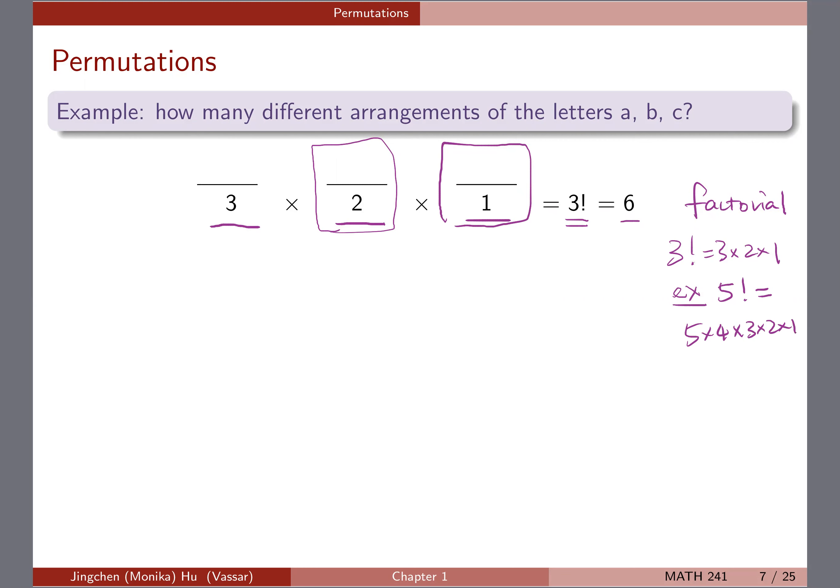So for example, if we're going to have five different letters, A, B, C, D, E, then the number of different arrangements for A, B, C, D, E is going to be five factorial, following the same logic.